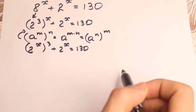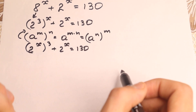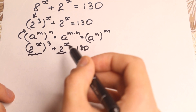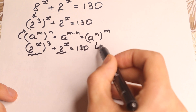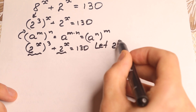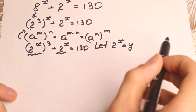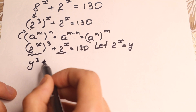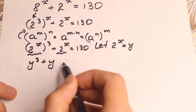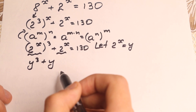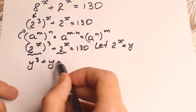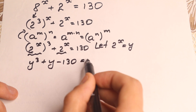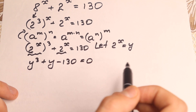We have the same expression — 2 to the power x appears twice — so we can work with substitution. Let 2 to the power x equal to y. So we have y cubed plus y, and bringing 130 to the left: y cubed plus y minus 130 equal to zero.